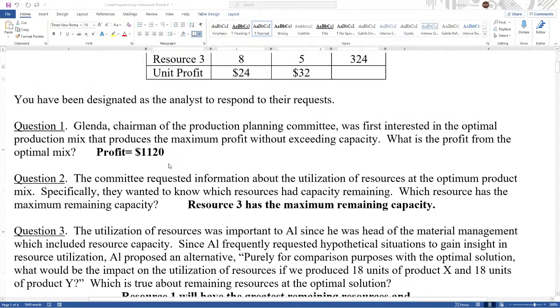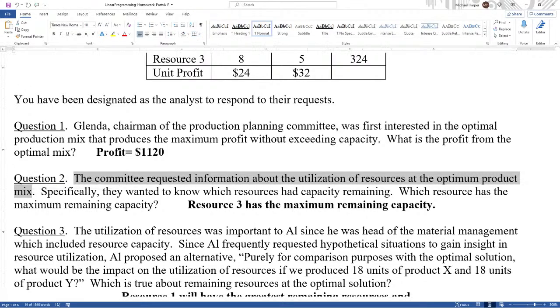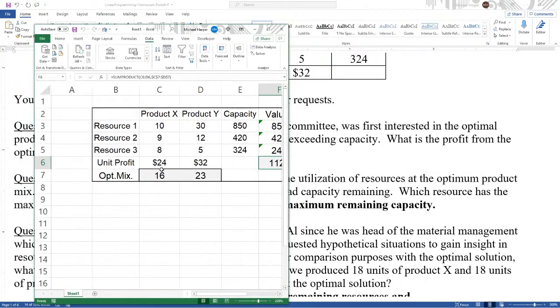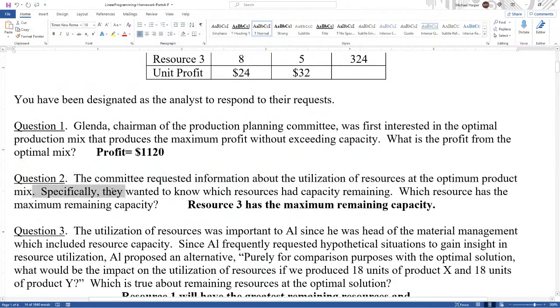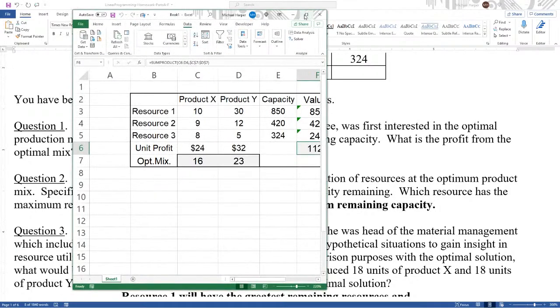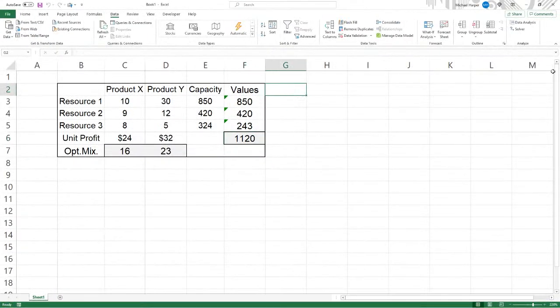So question two says, the committee requested information about the utilization of resources at the optimal product mix. Well, the optimal product mix is 16x and 23y. Specifically, they wanted to know which resources had capacity remaining. So which resource has the maximum capacity remaining? Let's come back here.